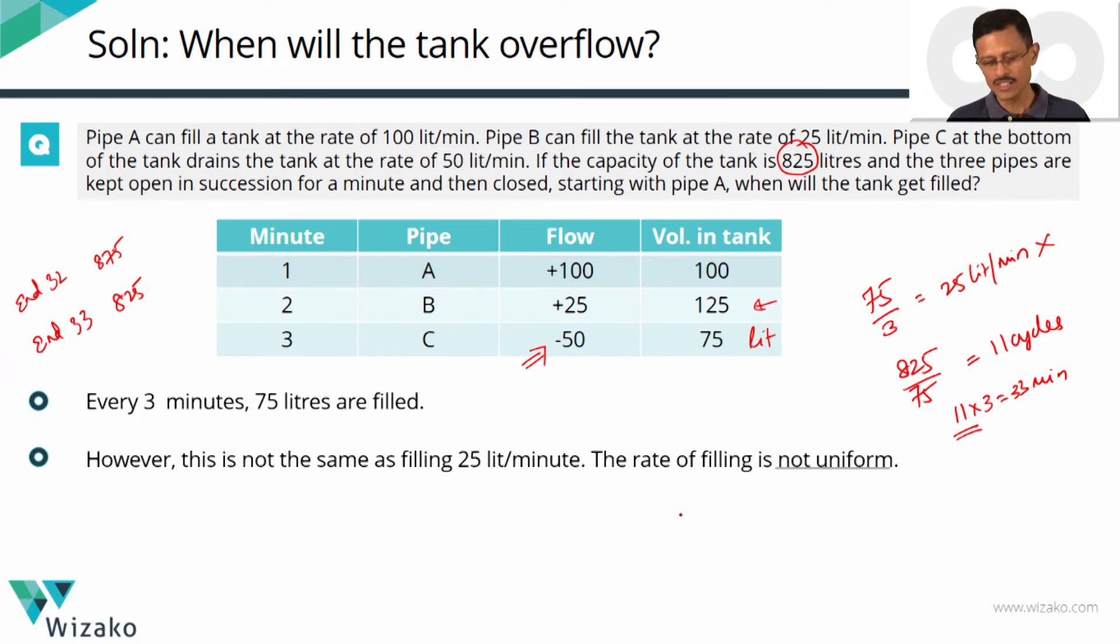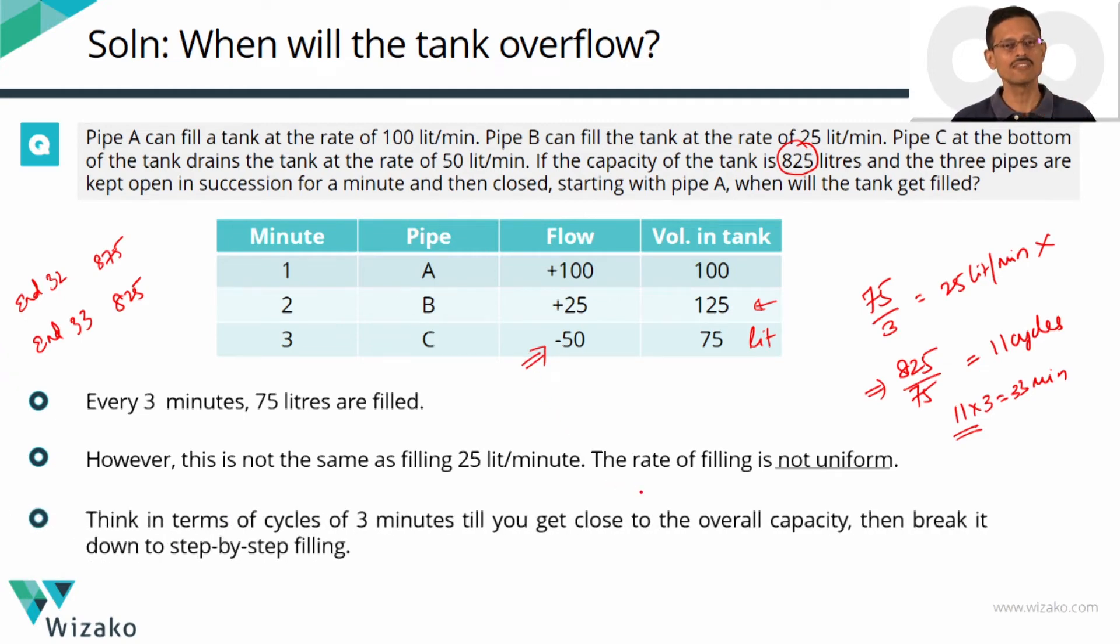So how do you solve such questions? Initially quickly check out how many full cycles are required using this method. If one of these pipes is a drain pipe in between then obviously don't go all the way up to the 11th cycle. In this example it's 11th cycle. In any other example it would have been the nth cycle. Stop at n-1 or n-2th cycle and then operate it on a per minute basis. In this case we'll stop at the 10th cycle because we realized you don't even have to go to the 11th cycle. So we'll stop it at the 10th cycle and then from there we'll take it minute by minute.